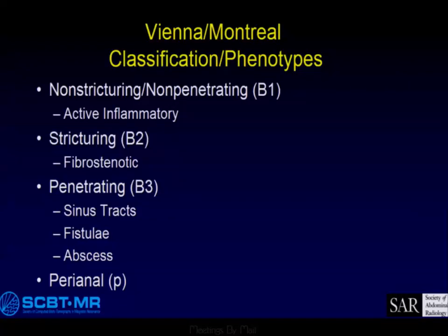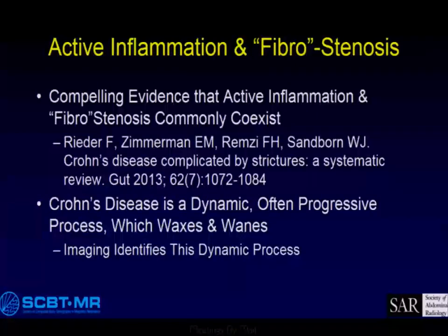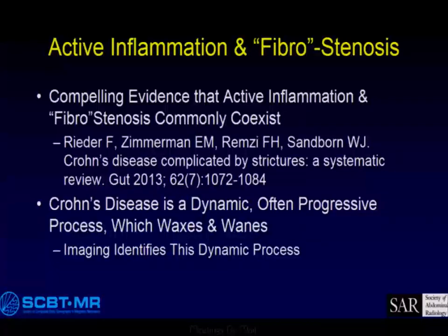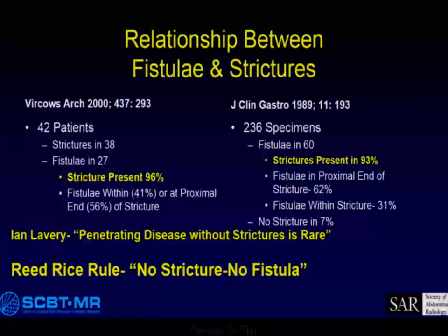The categories are non-stricturing, non-penetrating, stricturing, penetrating, and then perianal disease. The problem is that there's compelling evidence that active inflammation and fibrous stenosis commonly coexist. Crohn's disease is a dynamic, often progressive process which waxes and wanes. So imaging identifies this dynamic process, and it isn't just one category or another.